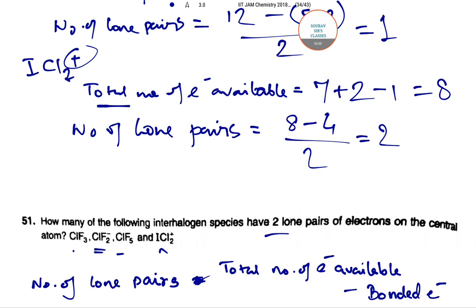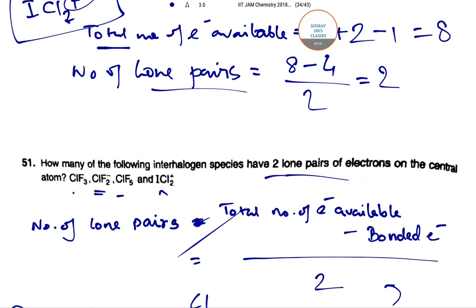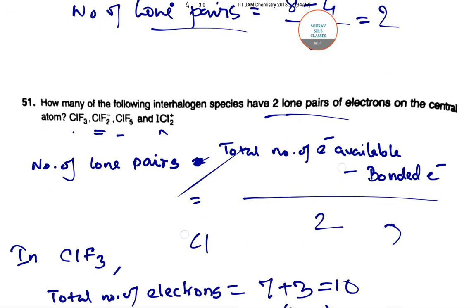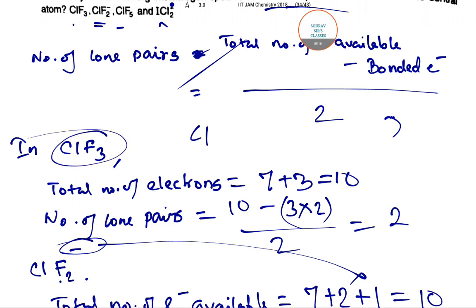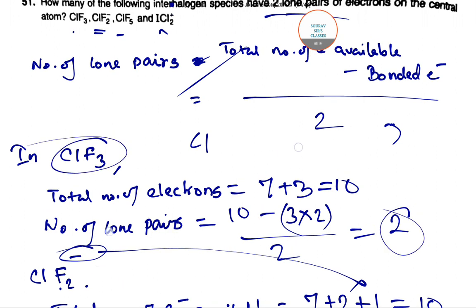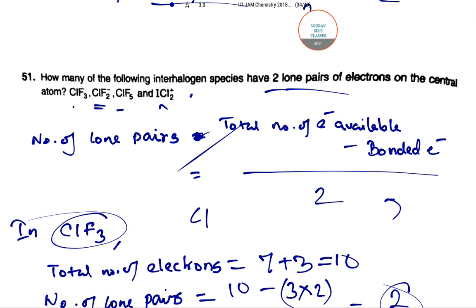So how many of the following interhalogen species have two lone pairs of electrons on the central atom? ICl2⁺ has two lone pairs and CLF3 also had two lone pairs. Therefore the answer is 2.